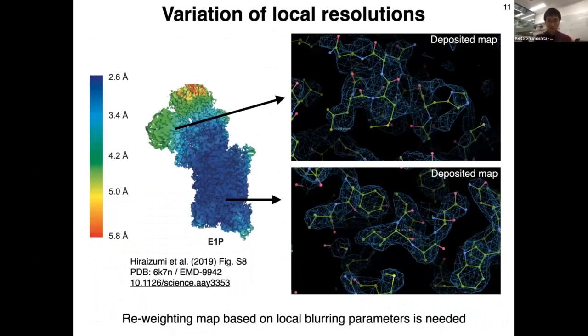However, maps from cryo-EM single particle analysis often have large variation of local resolutions. This density map is colored by local resolution estimates. If you look at the very good region, we see nice density like this. But in regions having poorer resolution, we see a bit ugly and less interpretable map. If we use the same weighting scheme for the overall region, we see this kind of thing. We need reweighting of the map based on local blurring parameters.